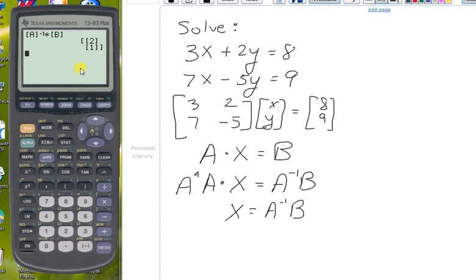What this tells us is in our solution that X equals 2, and Y equals 1. Or if we wrote it as an ordered pair, it would be 2 comma 1.